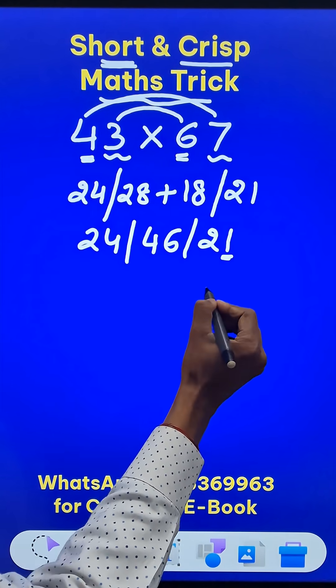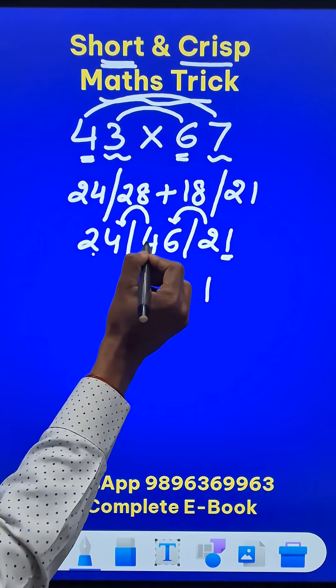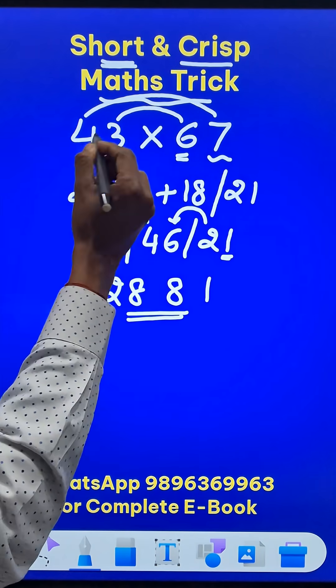Start retaining the unit digit 1. Carry forward the tenth digit, 46 plus 2 is 48. So 8, 4 carried, 24 plus 4 is 28 and here you get the product of these two numbers.